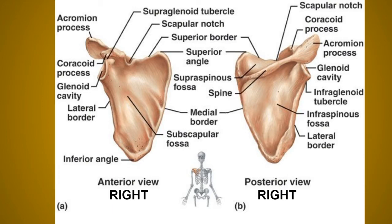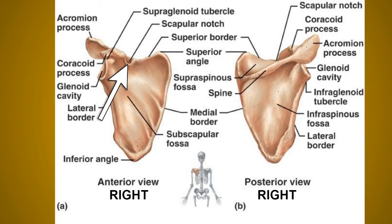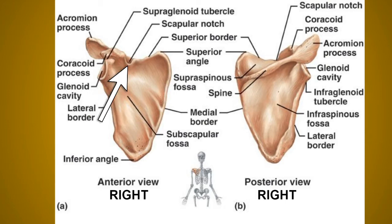The scapula has three borders: the superior border, the lateral border, and the medial border, since it is somewhat triangular in structure. The superior border is thin and shorter, and near the root of the coracoid process it presents the suprascapular notch, as you can see in the diagram near the coracoid process.